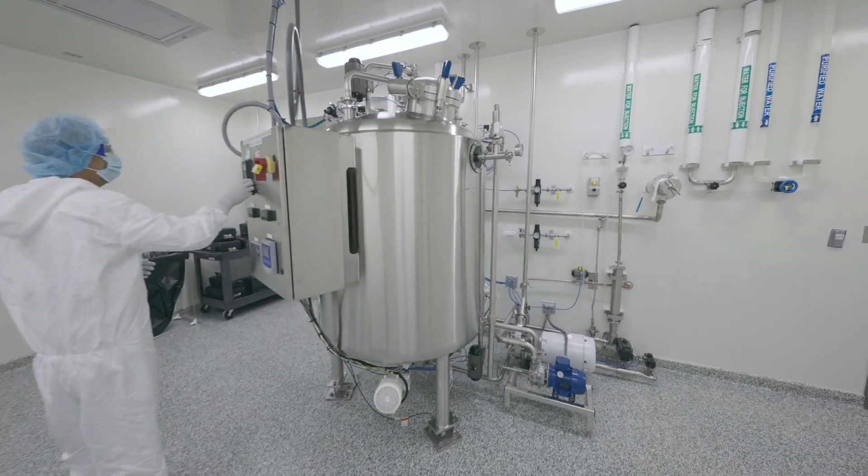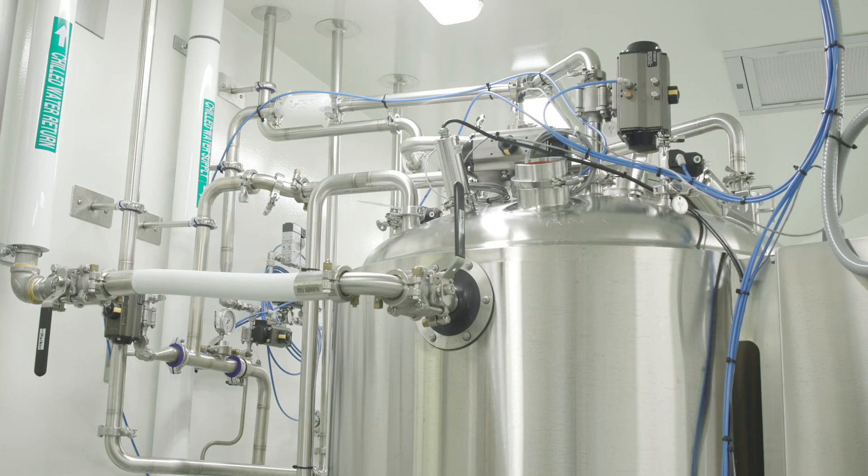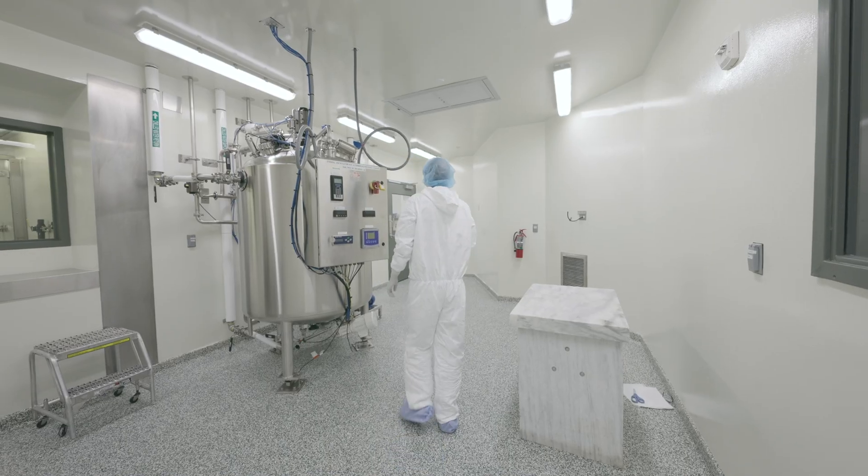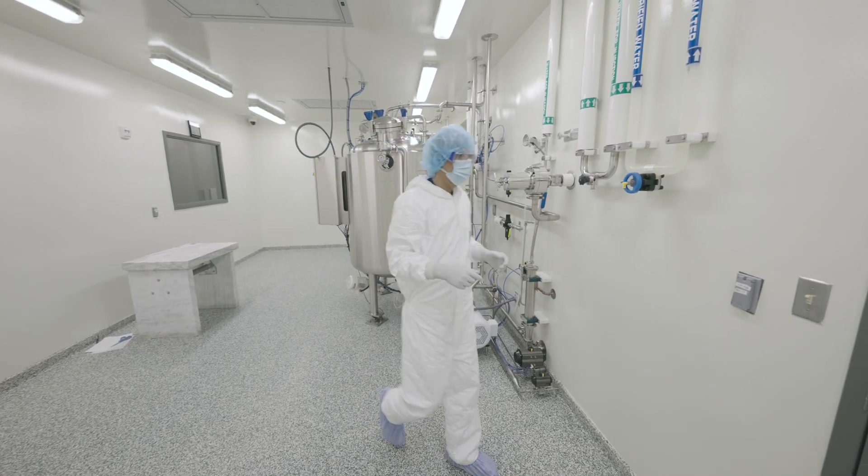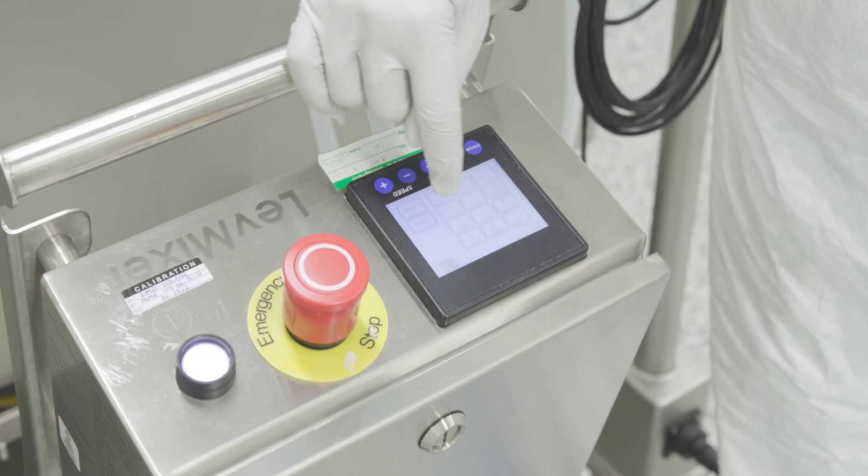Compounding vessels up to 1,000 liters support the compounding process for the Bosch line. The tanks can either be stainless steel jacketed tanks that regulate temperature or single-use disposable technology.